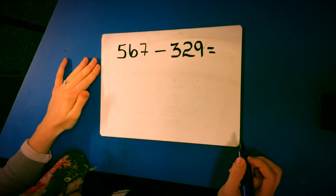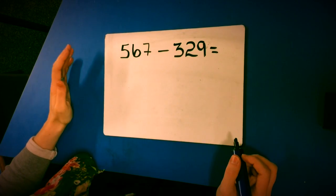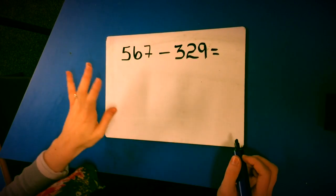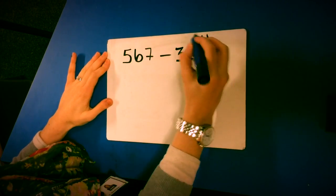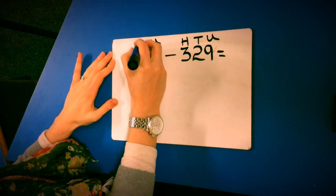This is year 4 subtraction. Just like the addition, we'll start by putting the place value columns above the digits. I've got my units, my tens, hundreds, units, tens, hundreds.